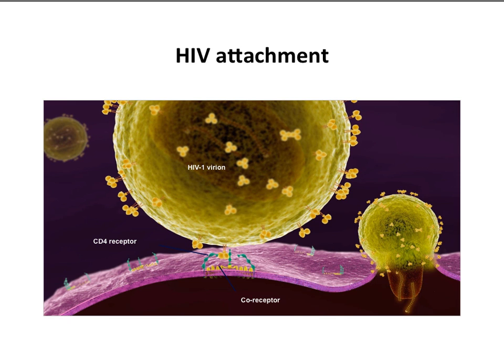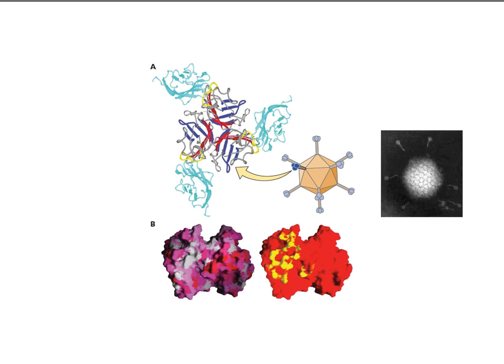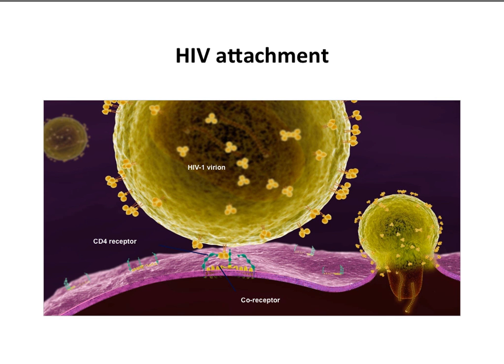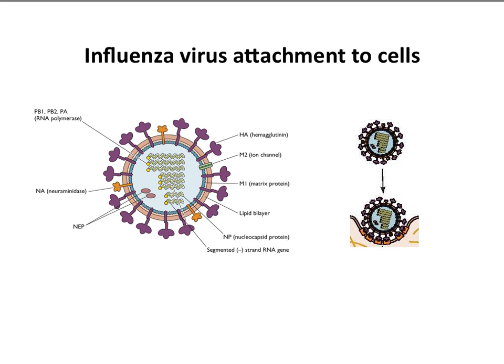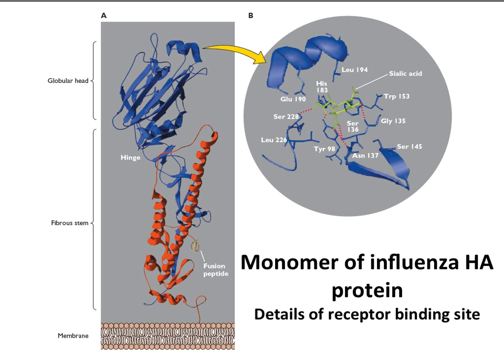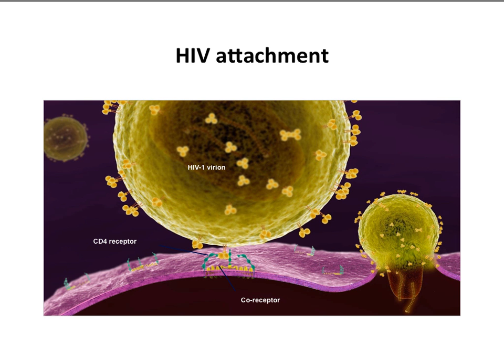Adenoviruses are those icosahedral viruses with the very tip of the fiber having a knob protein on it — you can see it right there — and that knob protein interacts with the cellular receptor on the cell surface. Regarding HIV, the glycoproteins are very few on the surface and may be arranged somewhat randomly — in contrast to flu, where they're quite dense. This is one reason why it's hard to neutralize HIV with antibodies: these proteins are spaced so far apart.